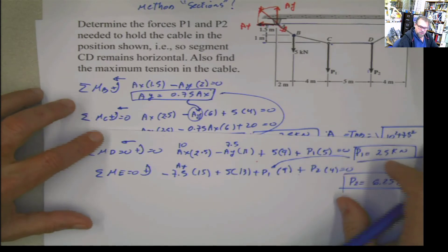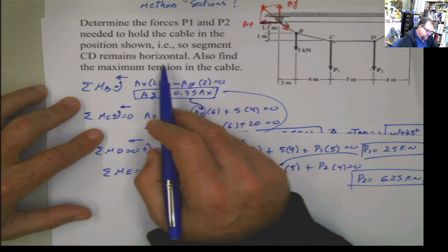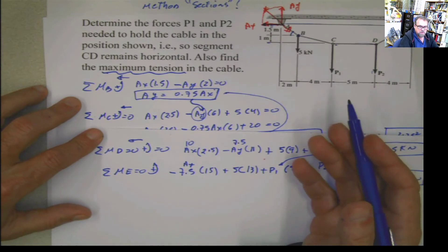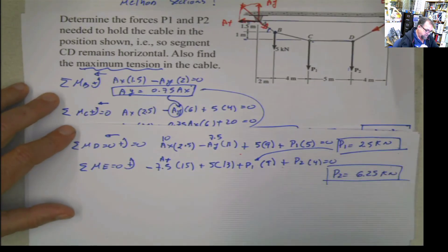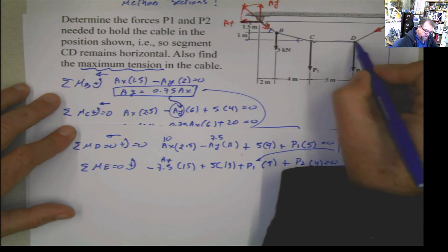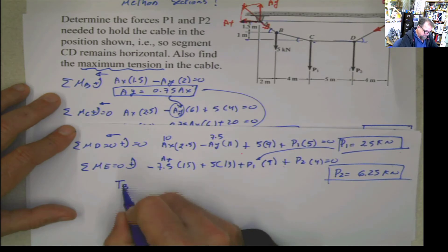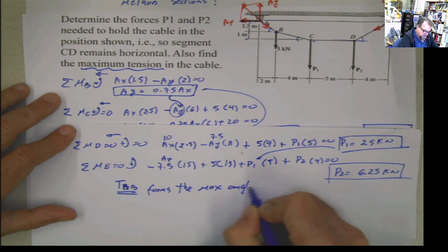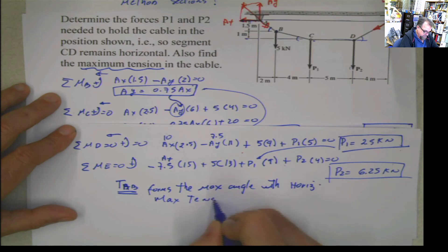Now the tricky part, which is not tricky because it's something that you should know from the theory, is that the problem is asking what is the maximum tension. I know this is the maximum angle. First, you can see it from the drawing, but don't just base your assumption on that because this may be written out of scale. Some professors do that just to see how well you're thinking. But you can calculate this angle really easy, and then you're going to find out that the maximum angle happens with TAB. TAB forms the maximum angle with the horizontal, meaning the maximum tension is going to be TAB.